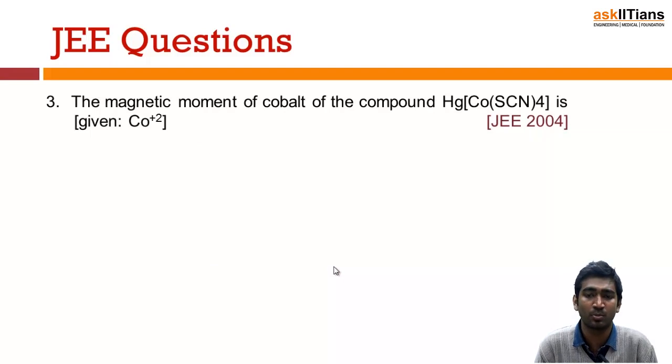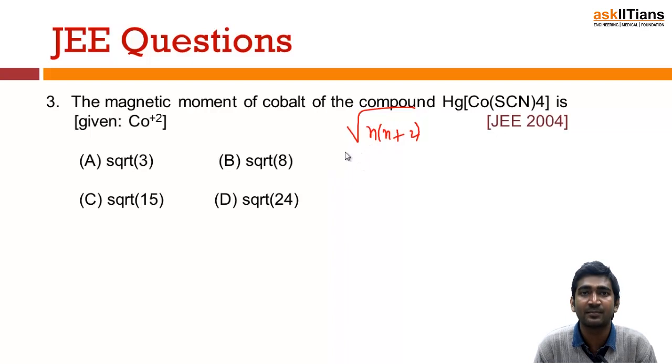Third question: the magnetic moment of cobalt of the compound HgCo(SCN)4 is given. Co has a 2+ oxidation state here. This is a coordination compound and you have to find the magnetic moment of cobalt. The formula for magnetic moment is root of N into N+2, where N is the number of unpaired electrons. I have to check the number of unpaired electrons. If I go Co2+, the electronic configuration of Co is 4s2 and 3d7.